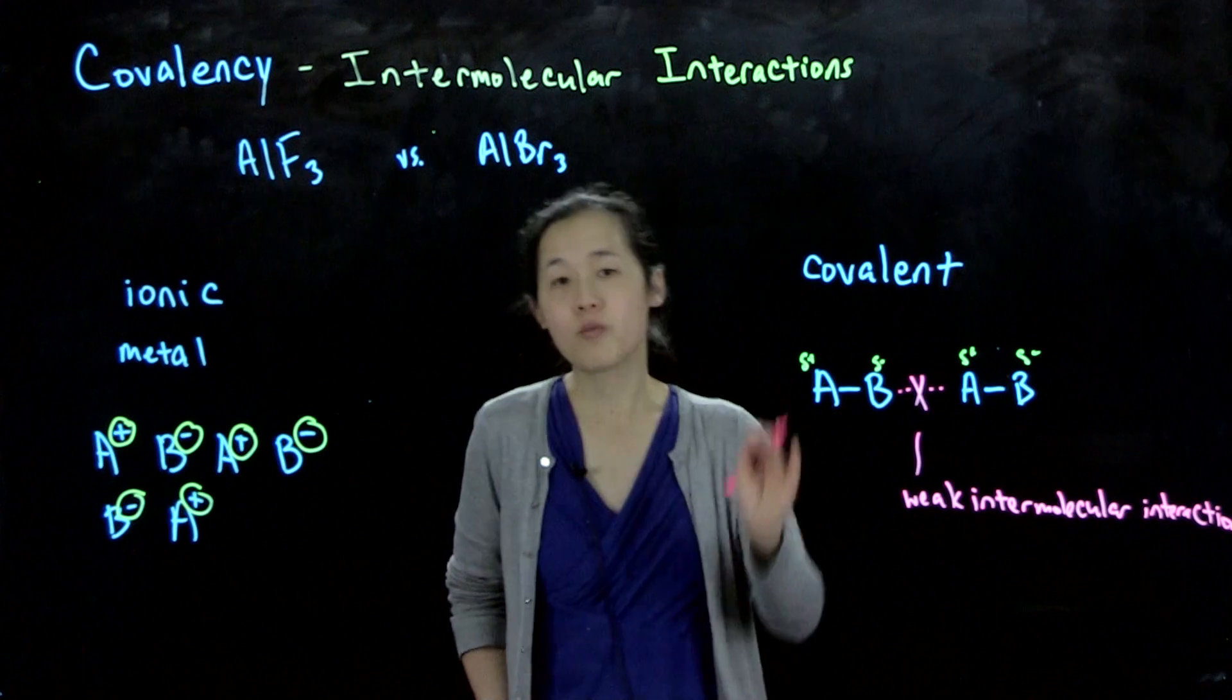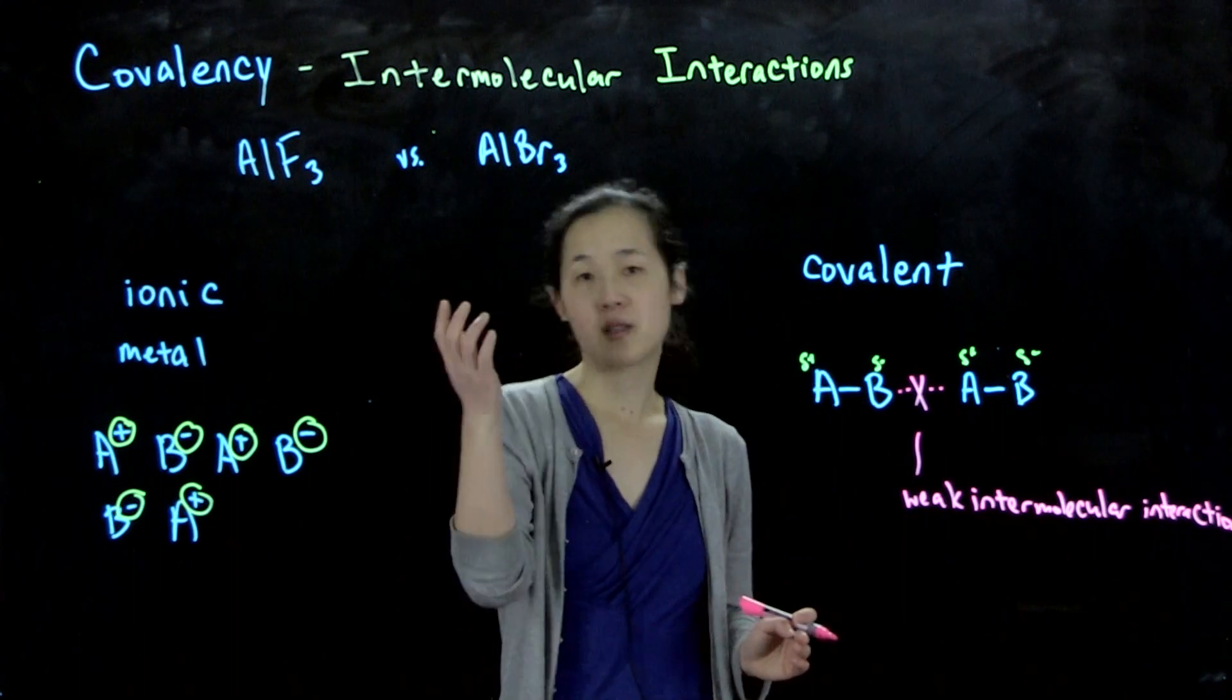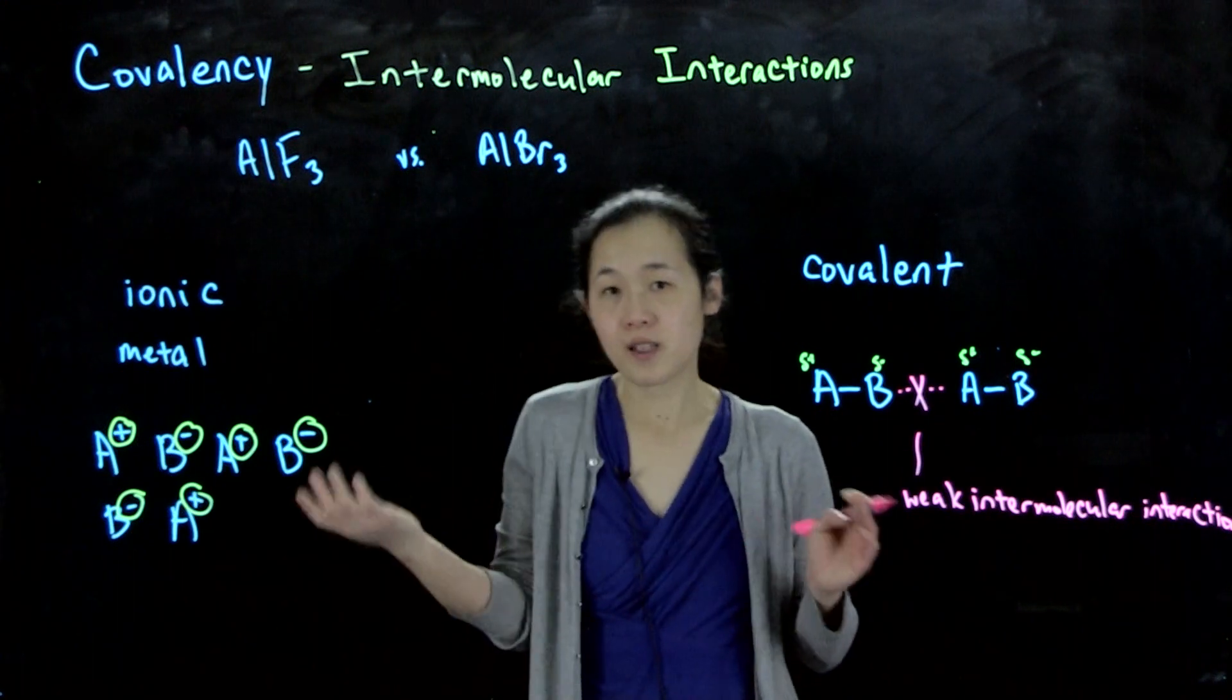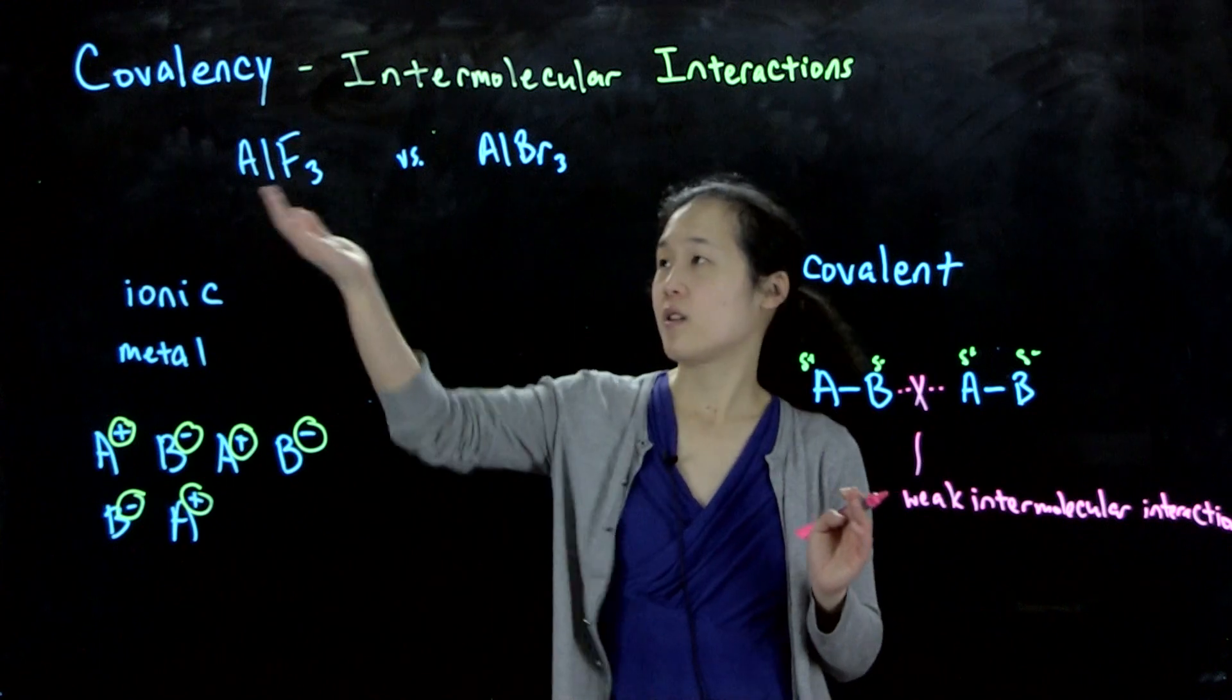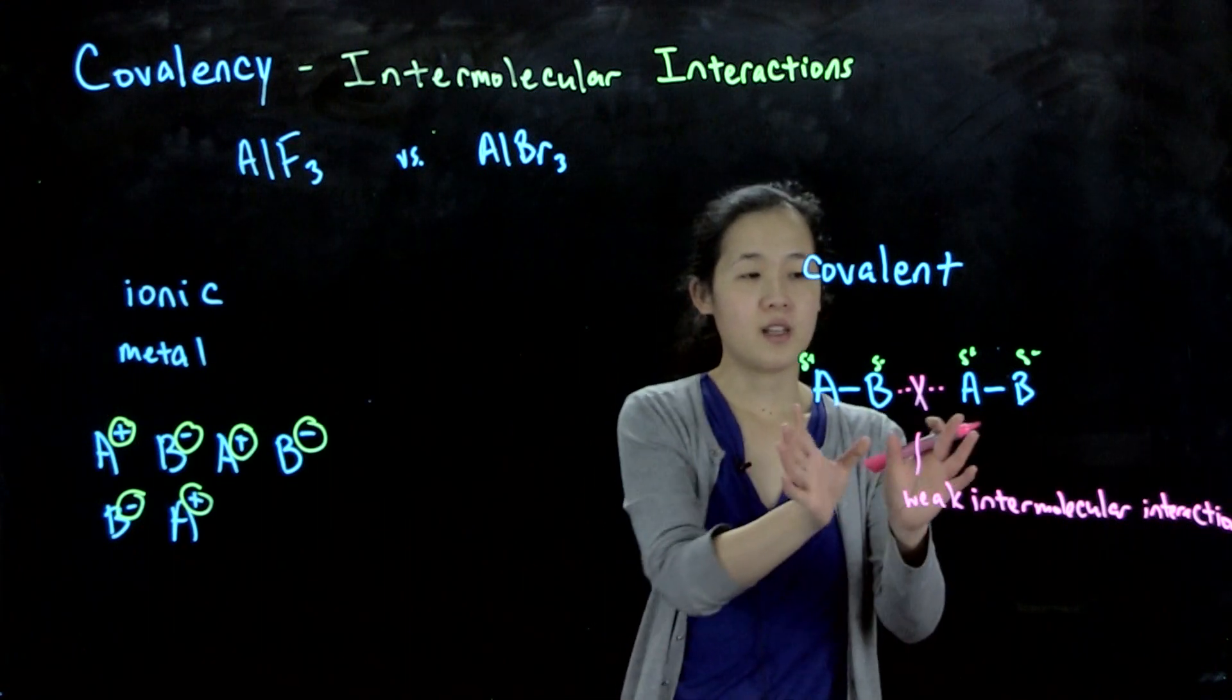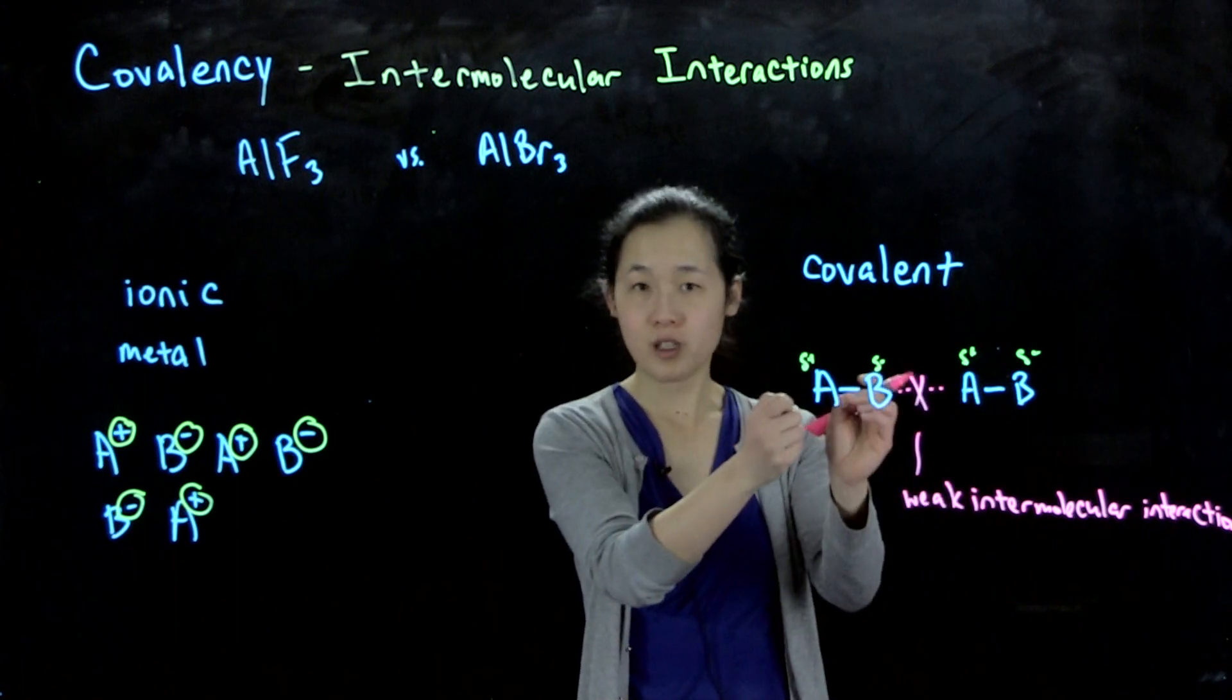The result was that the more covalent molecular form of aluminum tribromide, which was the dimer Al2Br6, has a melting point that's very accessible and very low compared to this one, which had a melting point of like 1,200 degrees. It's whether how easily we can break the intermolecular interaction.